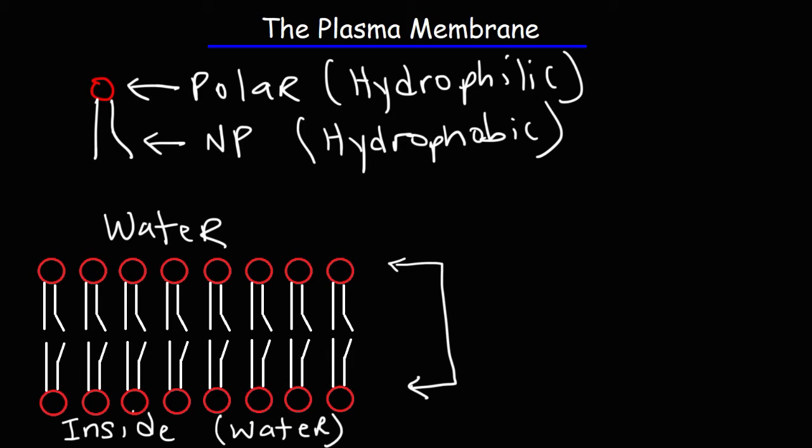Notice that the heads of the phospholipids are oriented in such a way that they face in water. It's because they're polar. They're attracted to it. Whereas the interior are the tails of the phospholipids and they're directed away from water because that region is hydrophobic. It's nonpolar. So that's the structure of the phospholipid bilayer. It's made up of phospholipids and that comprises the cellular membrane or the plasma membrane.